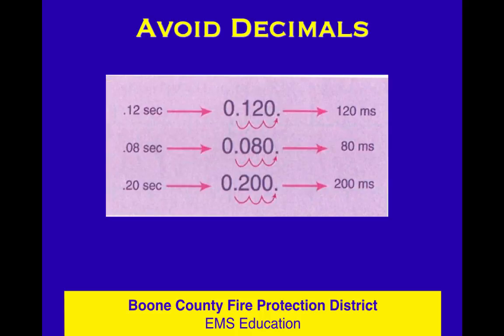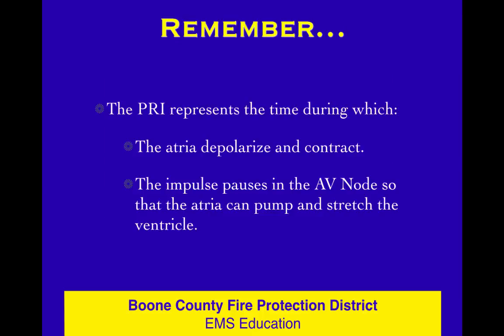For safety and accuracy, we don't like decimals — decimals can get in our way. We would like to talk about things in terms of milliseconds. There are really two numbers you need to know: 120 and 200. That will serve you well for the PRI and the QRS. Most folks aren't even dealing with QTC — we add that in for advanced medics, and that number is 450 or 500 depending on how you look at it.